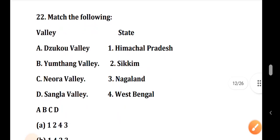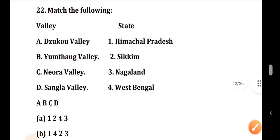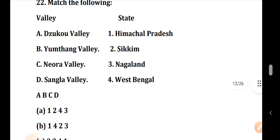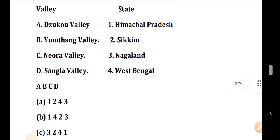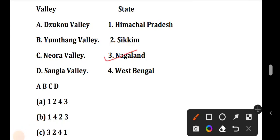Question number 22: What are the following points related to the state? I will see the following points. The name of the valley is Nagaland. The name of the valley is Sikkim. The name of the valley is Northwest Bengal.